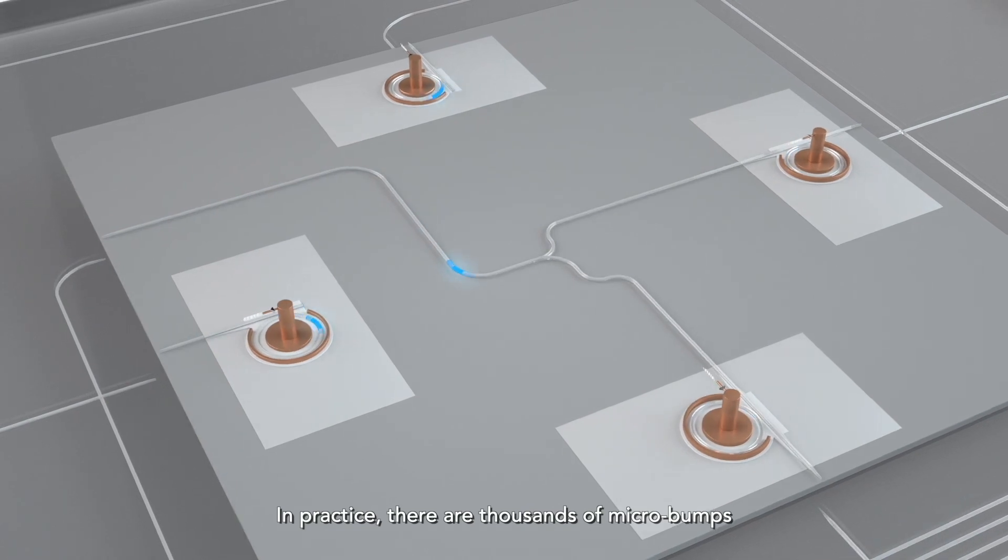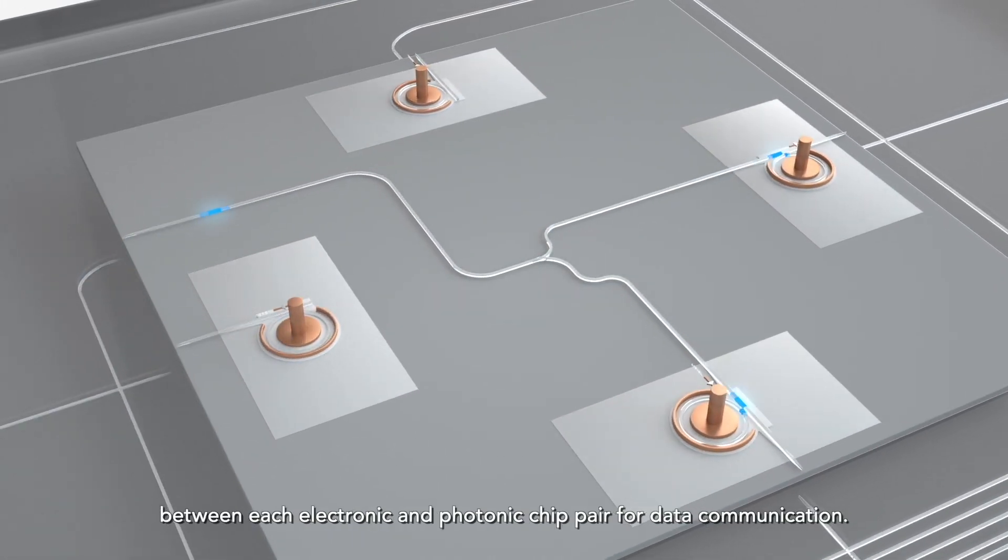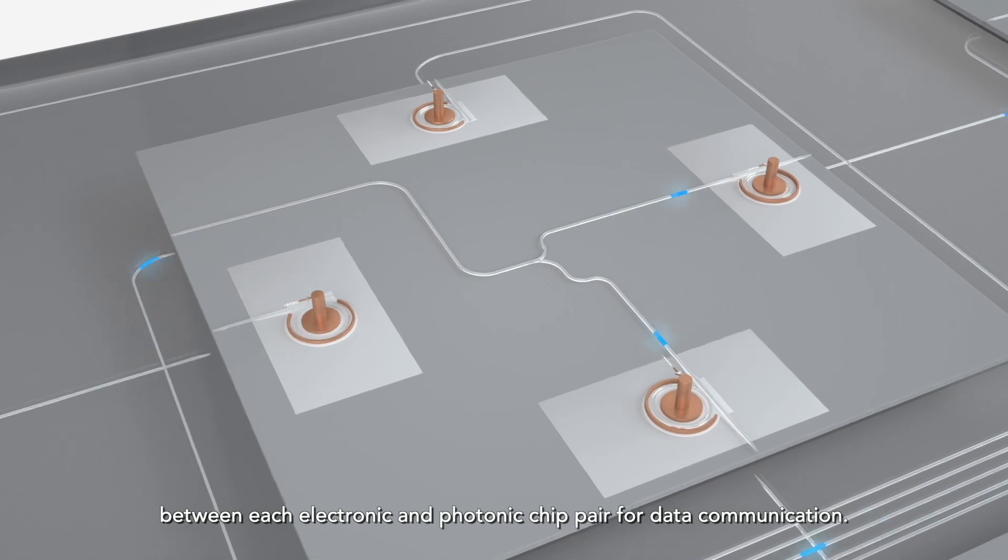In practice, there are thousands of micro-bumps between each electronic and photonic chip pair for data communication.